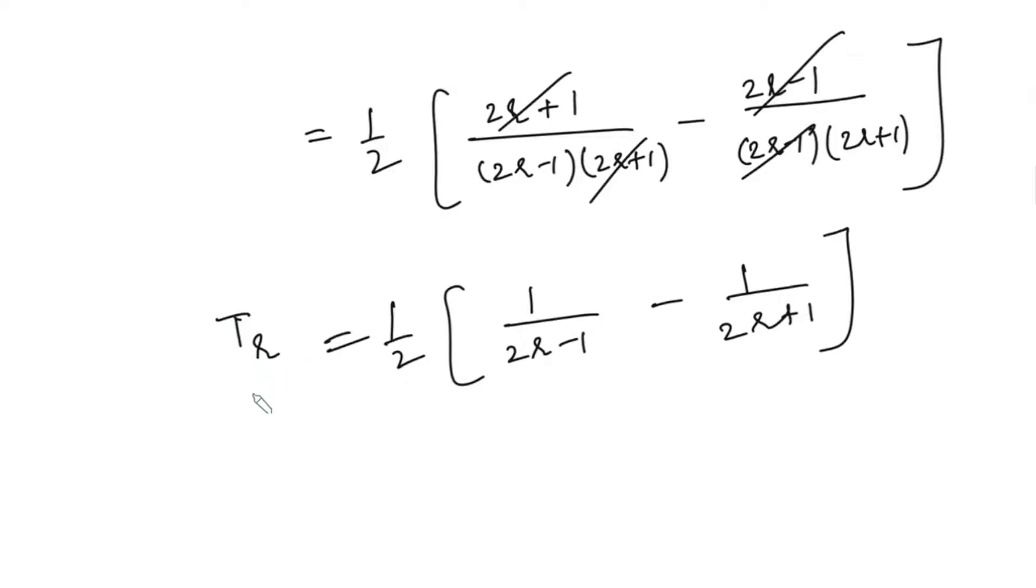We can find T1, T2, T3, T4, and so on, all the terms, and then we can add all of them vertically. So if I use r as 1, we will get 1/2 times [1/(2×1-1) - 1/(2×1+1)], which is the same as 1/2 times (1/1 - 1/3).